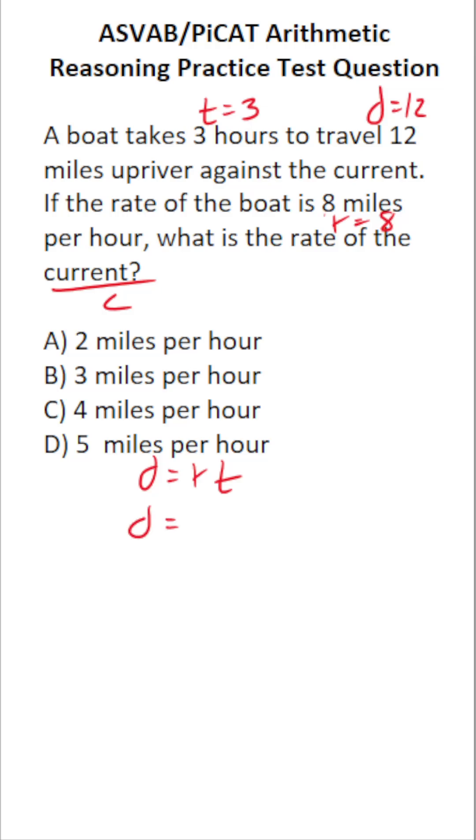Distance isn't going to change. Now, rate is going to change. This current is going to slow down the rate of the boat, and to represent that algebraically, we're going to do R minus C times time, of course.